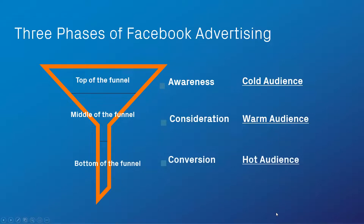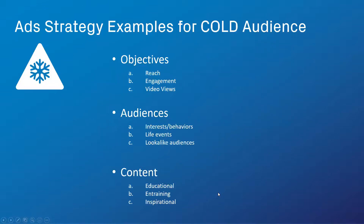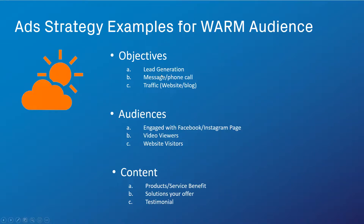These are the three stages you must take people through — it's the only way social selling works. If you go straight to selling cold audiences, it just doesn't work. With your ad strategy, for cold audiences the objective is always reach and engagement because you're building awareness, and you can use interest-based audiences. For warm audiences, use lead generation, messaging, phone call, or traffic to your website. Audiences are people who have engaged with your Facebook or Instagram page, viewed your videos, or visited your website.